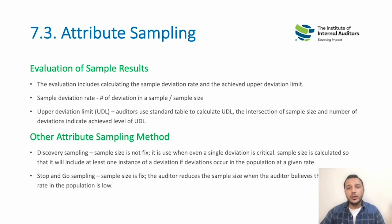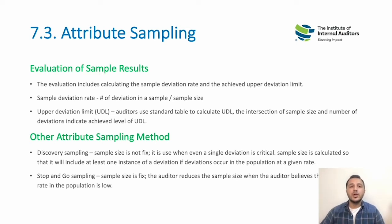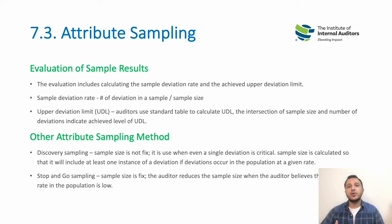When evaluating sample results, you look at the sample deviation rate and the upper limit of that deviation. For example, if you believe a deviation within a range of two to five percent is acceptable, that's fine. But if deviation goes above that range, it becomes an audit finding.